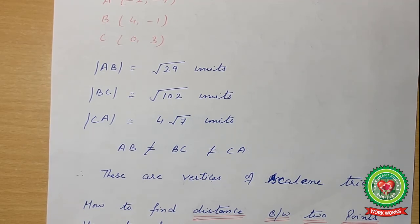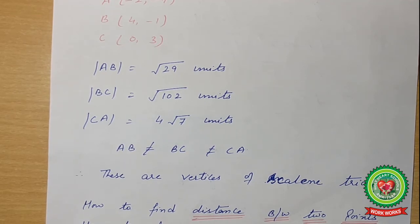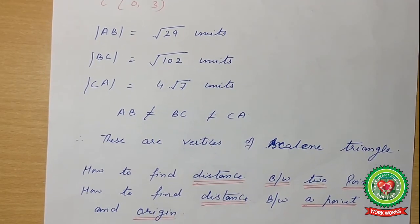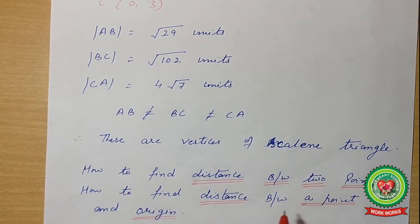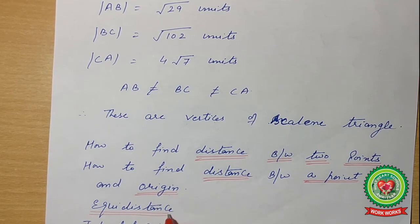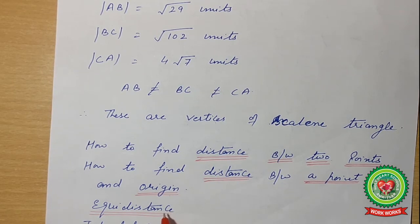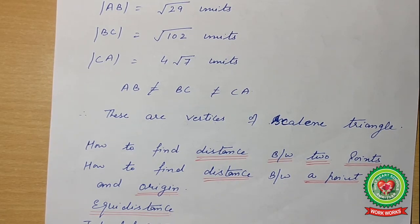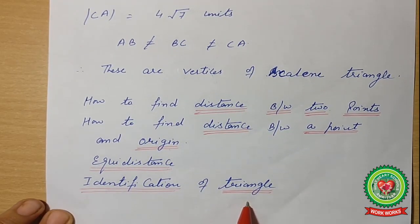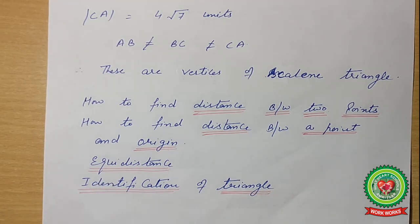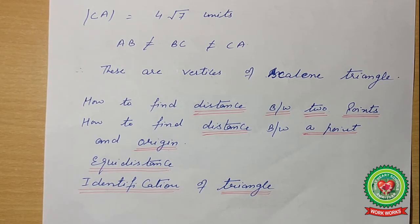Now let's recall what we have done related to the distance formula topic so far. We covered how to apply the distance formula, how to find the distance between two points, how to find the distance between a point and the origin, the concept of equidistance, and the identification of the type of triangle when vertices are given. All these topics are correlated to the distance formula.